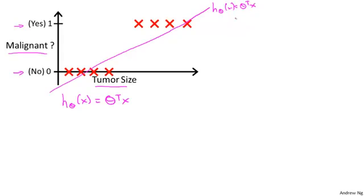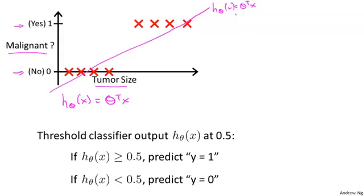If you want to make predictions, one thing you could try doing is threshold the classifier output at 0.5, that is at the vertical axis value 0.5. If the hypothesis outputs a value that is greater than or equal to 0.5, you predict y equals 1. If it's less than 0.5, you predict y equals 0.